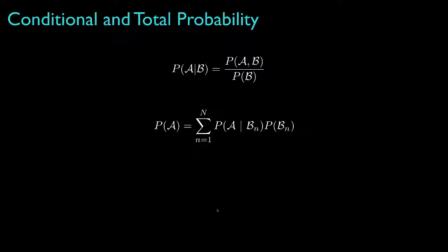In summary, the relationships between conditional and joint probabilities, and the way we use conditional probabilities to evaluate total probabilities, are important associations that we'll use for many applications of probability theory.